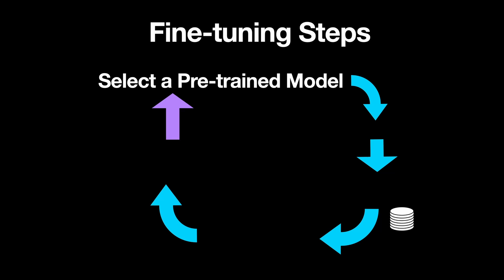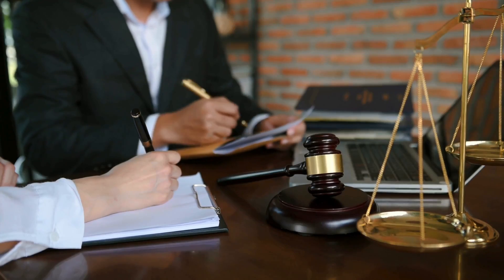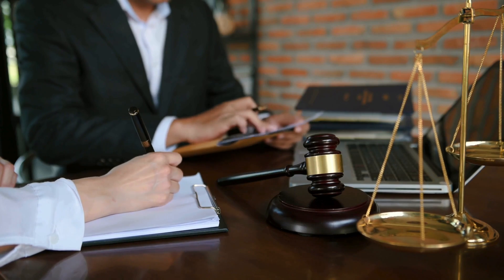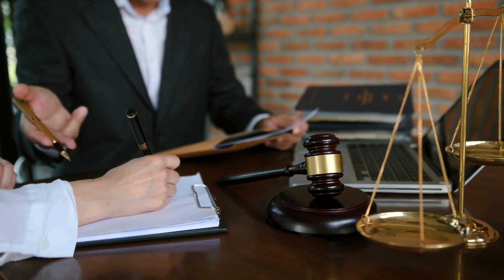The second step towards fine-tuning is defining the task you want to fine-tune on. For example, if you're a law firm dealing with pages of documents every day, you'll probably have to fine-tune for summarization. Before moving on to the next steps, you should ensure there is sufficient data to feed these LLM models. To avoid overfitting, you may need hundreds of data points so that these LLMs get sufficient data to train on.